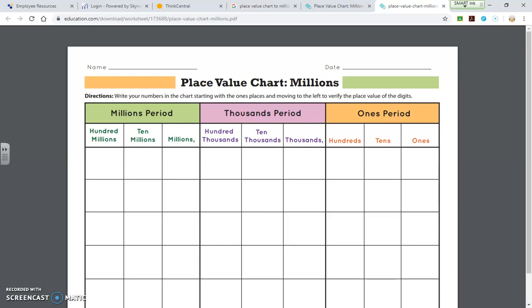Then we go up to the thousands, ten thousands, hundred thousand, millions, ten million, hundred million. So you can see the pattern repeated over and over. And if you need to, use this chart to fill in your numbers as we go.